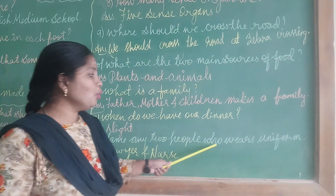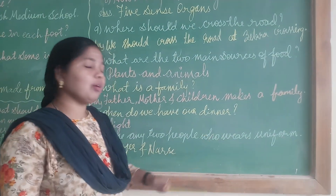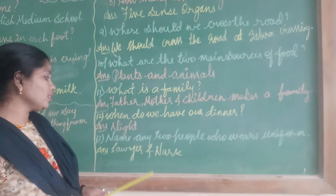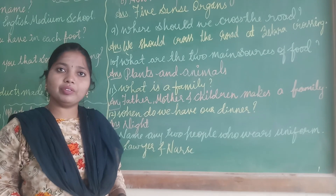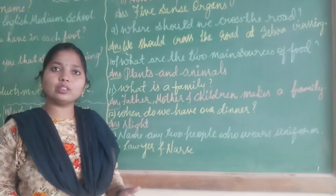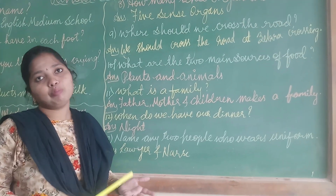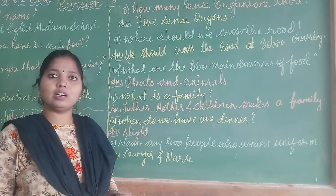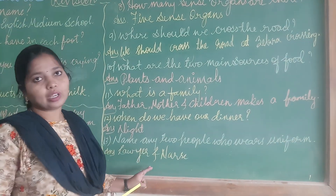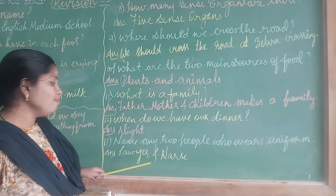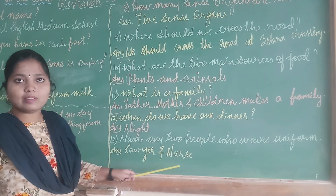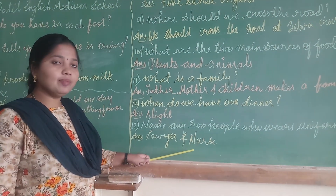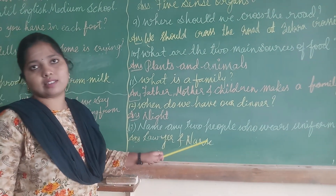Next: Name any two people who wear uniform. You should name any two people who wear uniform. In our clothes chapter we studied there are so many people who wear uniform — postman, policeman, doctor, nurse, lawyer. Any two names you can write here. I have written lawyer and nurse. L-A-W-Y-E-R, lawyer, and N-U-R-S-E, nurse.